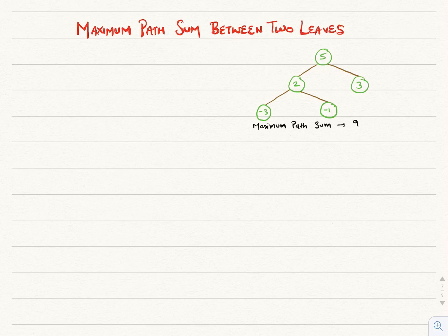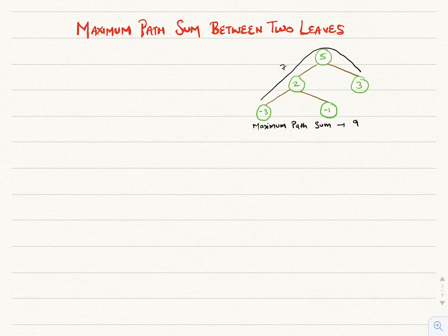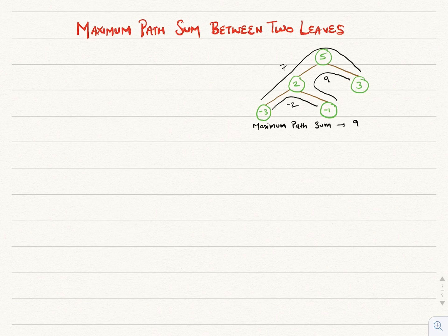Hi everyone, let's discuss another problem. The problem is: given a binary tree in which each node element contains a number, we have to find the maximum possible sum from one leaf node to another. In the given example, the path sum from leaf -3 to 3 will be 7, the path sum from leaf -3 to -1 is -2, and the path sum from leaf -1 to 3 is 9. So we have to return the maximum of them all, which is 9.